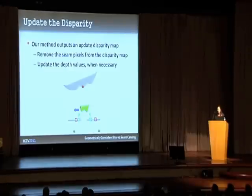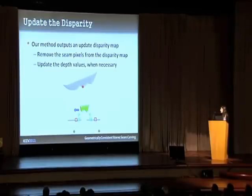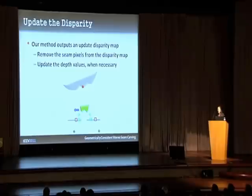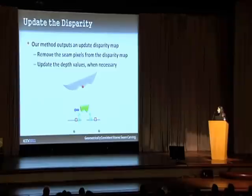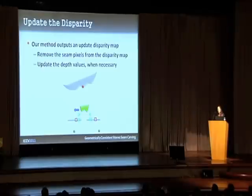The final step after choosing the pair of seams to be removed is to update the disparity map. We remove the corresponding pixels from the disparity map, but in certain cases we also have to update the depth value itself. For example, by removing the red points, point P in the left image shifts left while point Q in the right image remains at the same location, requiring us to update the disparity value for that point.